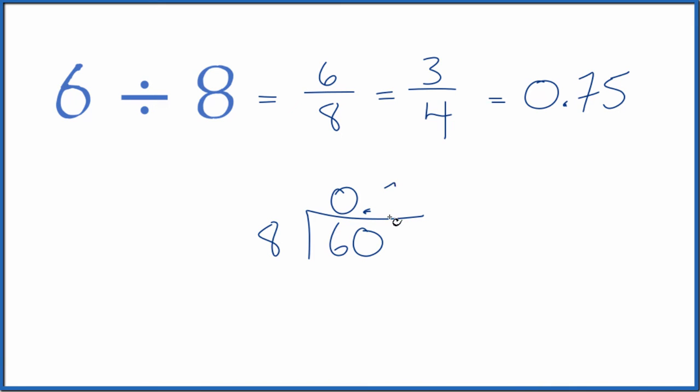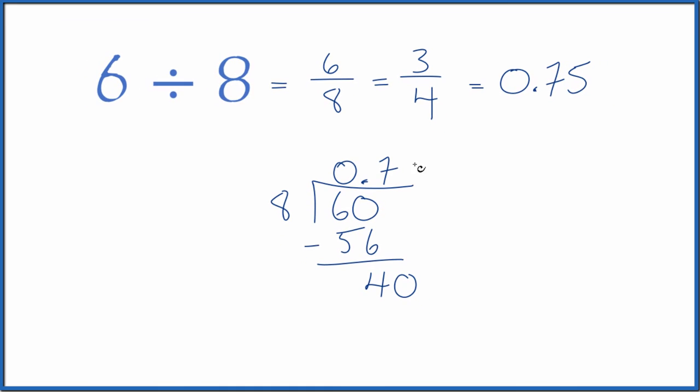8 times 7, that's 56. Subtract and we get 4. Make this 40 and we can move over 1. 5 times 8, that's 40. And then we subtract no remainder.